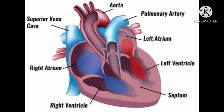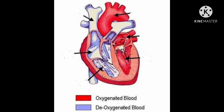The left side of the heart and the right side of the heart act as two separate pumps. The left side of the heart acts as one pump which pumps oxygenated blood into the whole body, and the right side of the heart acts as another pump which pumps deoxygenated blood only to the lungs.